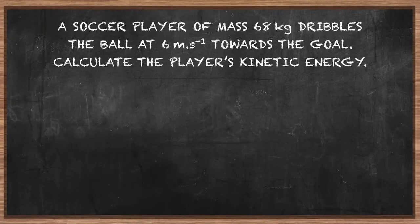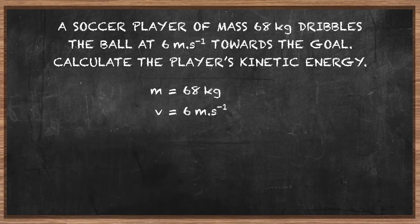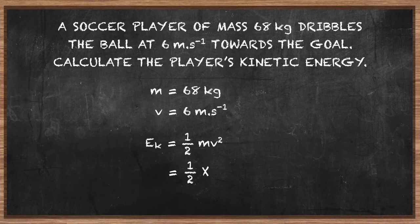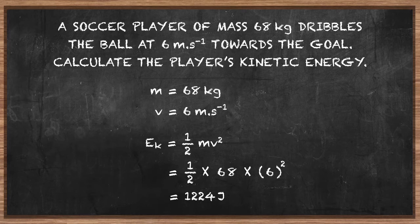The soccer player has a mass of 68 kilograms and is moving at a constant speed of 6 meters per second towards the goal. Use the formula EK = ½mv². Substitute the values and remember to square the speed. The answer is 1224 joules. Remember that the SI unit of energy is the joule.